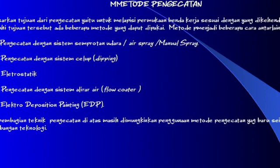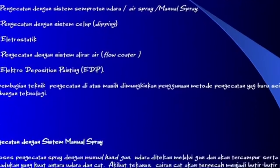Metode pengecatan terbagi menjadi beberapa cara, antara lain: pengecatan dengan sistem semprot udara atau air spray manual, yang kedua air spray atau dipping, yang ketiga elektrostatik, yang keempat pengecatan dengan sistem aliran air atau flow coater, yang kelima elektro deposition painting atau EDP. Selain itu, masih dimungkinkan penggunaan metode pengecatan baru seiring perkembangan teknologi.